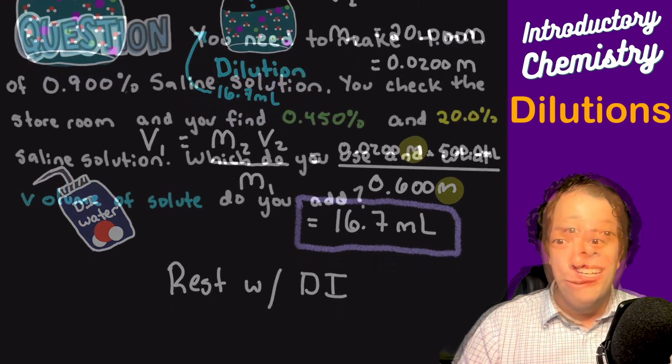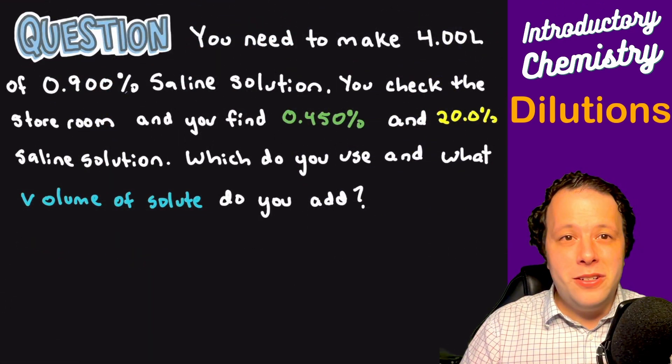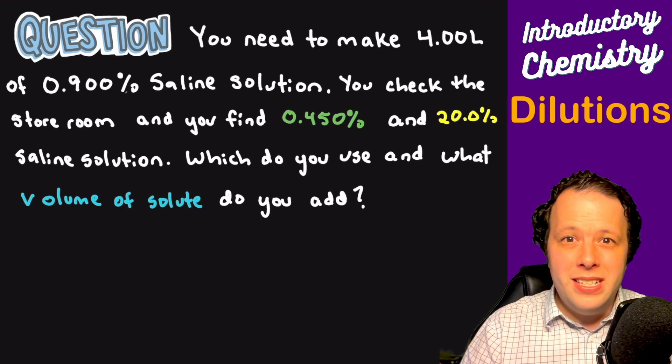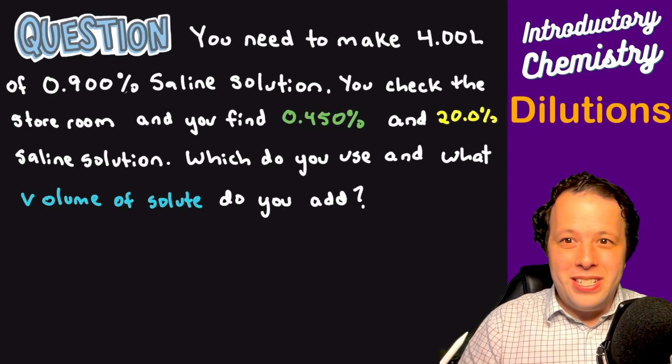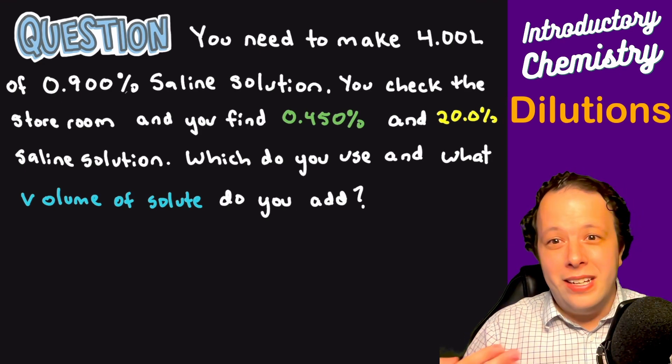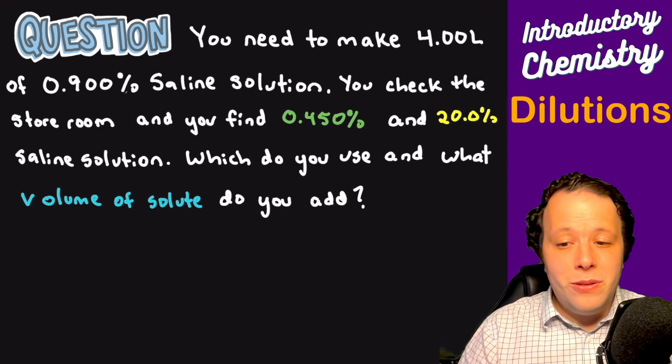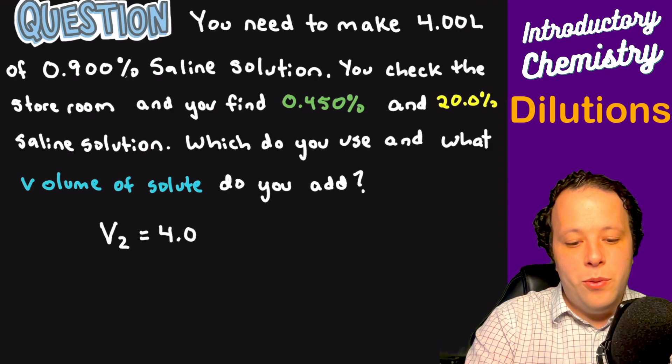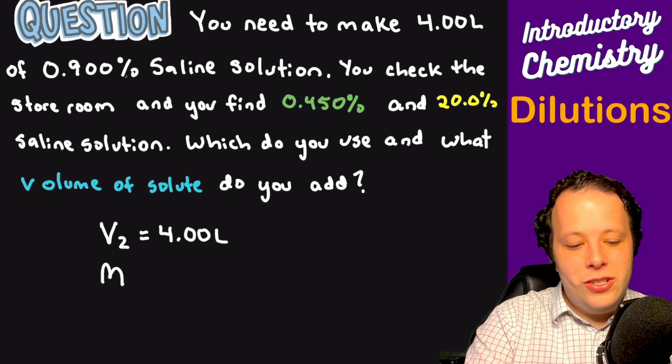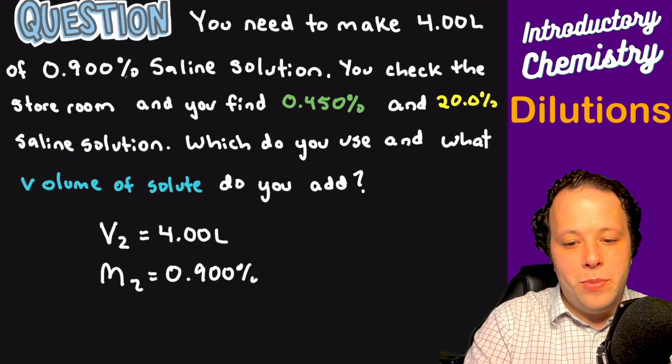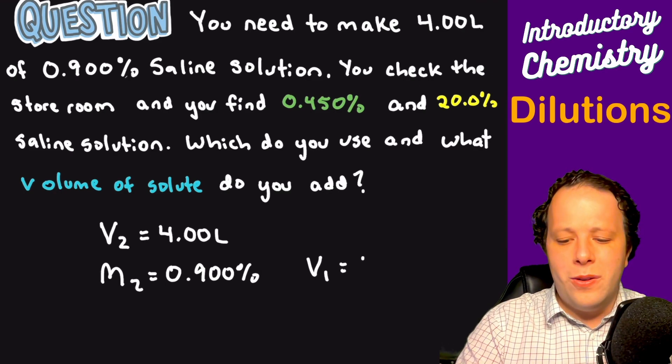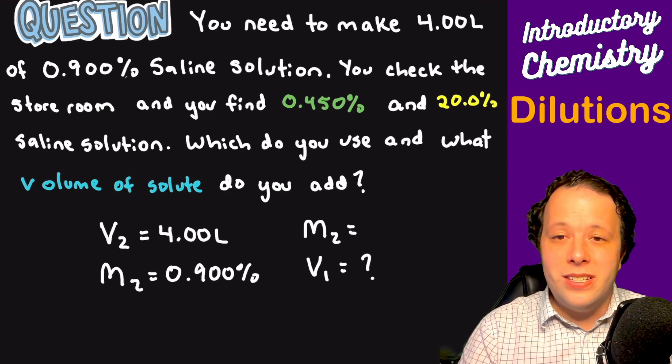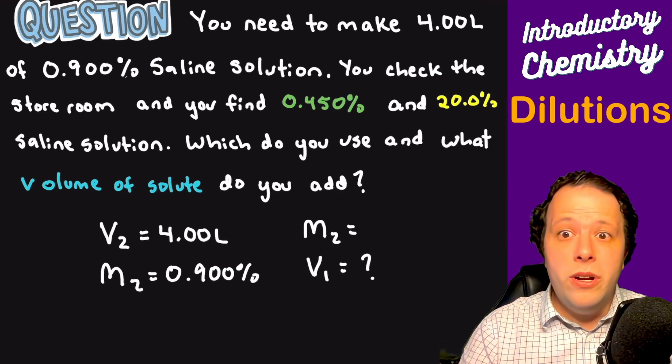Let's take a look at another problem. You need to make four liters of a 0.900% saline solution. You check the storeroom and find 0.450% and a 20% saline solution. What do you use and what volume of that solute do you add? This is a tough one. Let's write everything down. Our V2 is four liters with a concentration of 0.900%, and we're trying to figure out what our original volume is. We have a couple options for the molarity, which is pretty common in a chemistry lab.